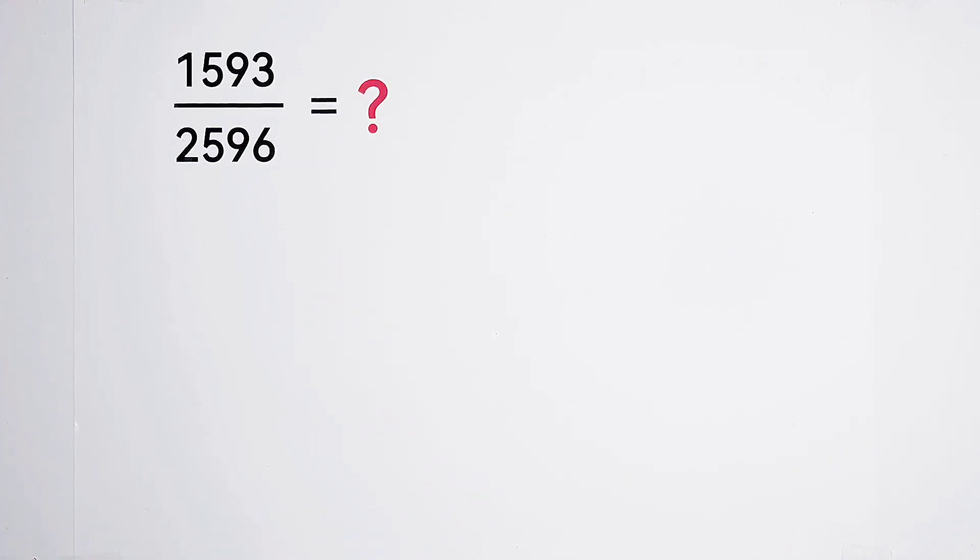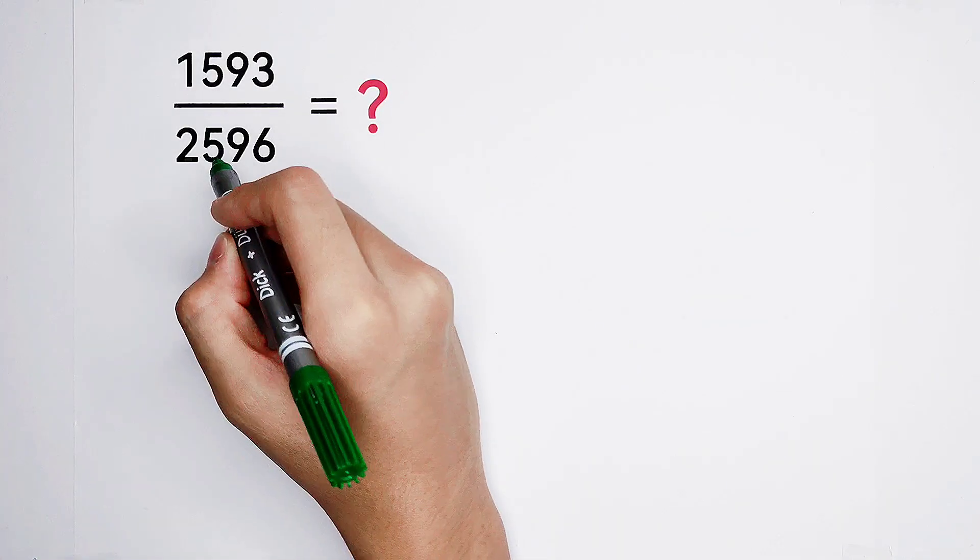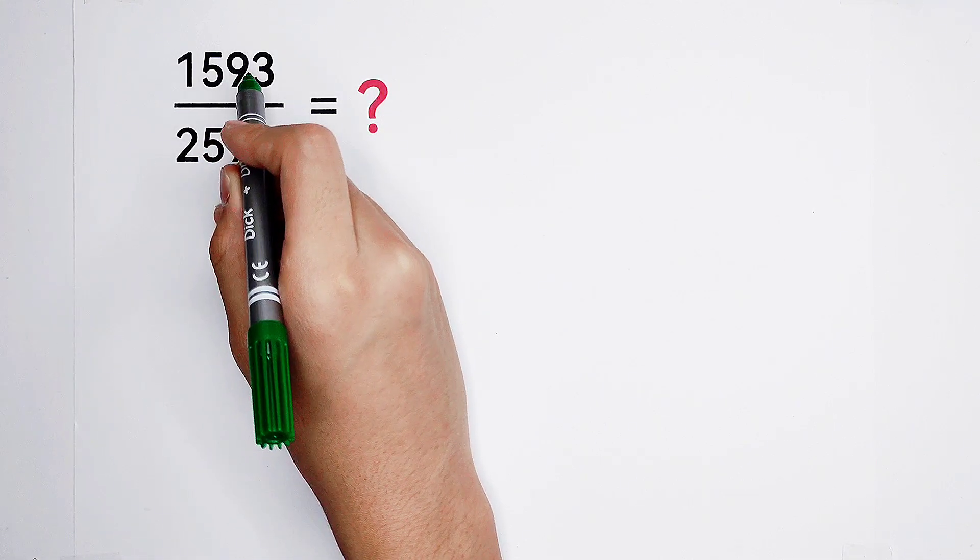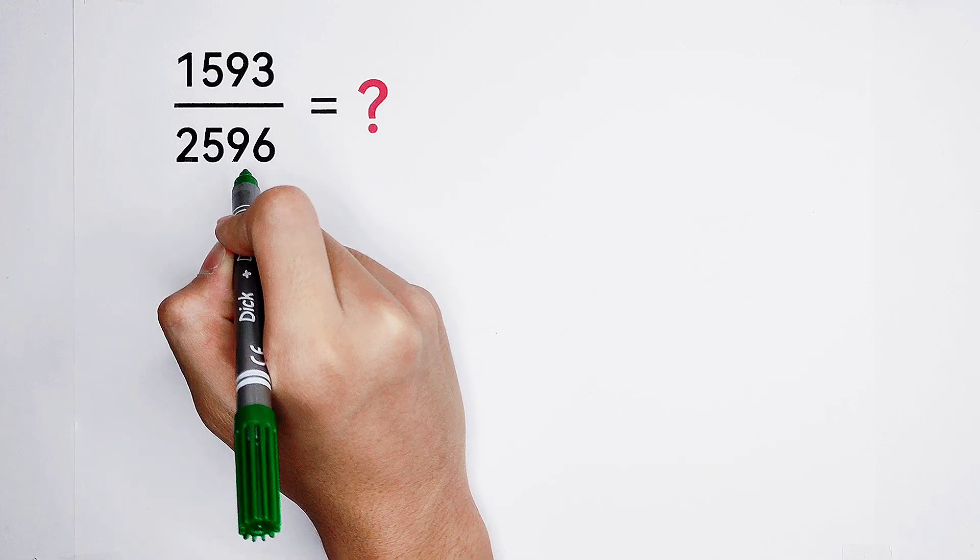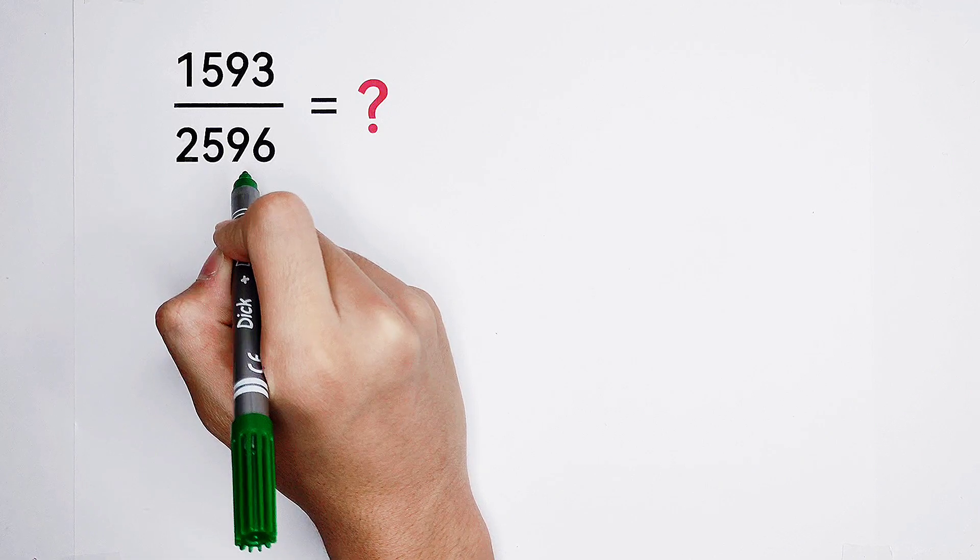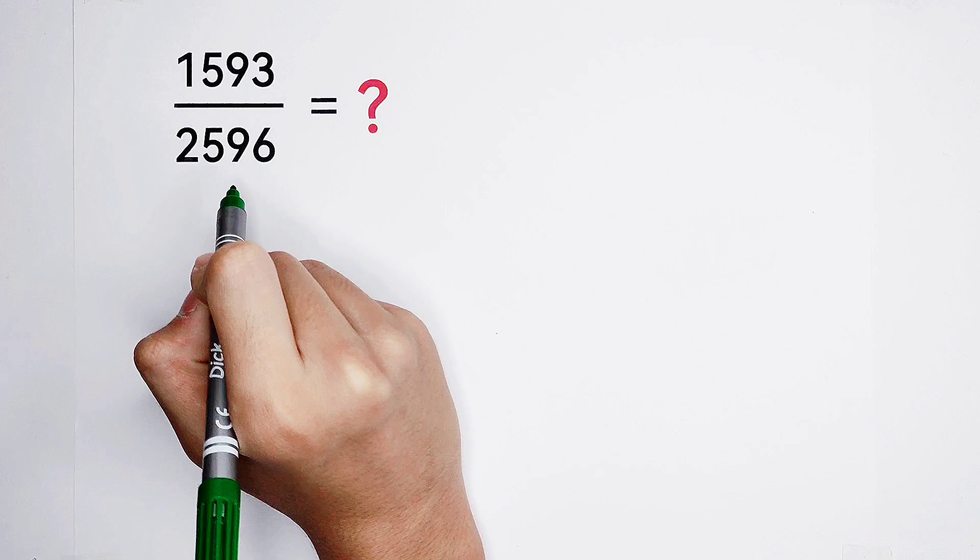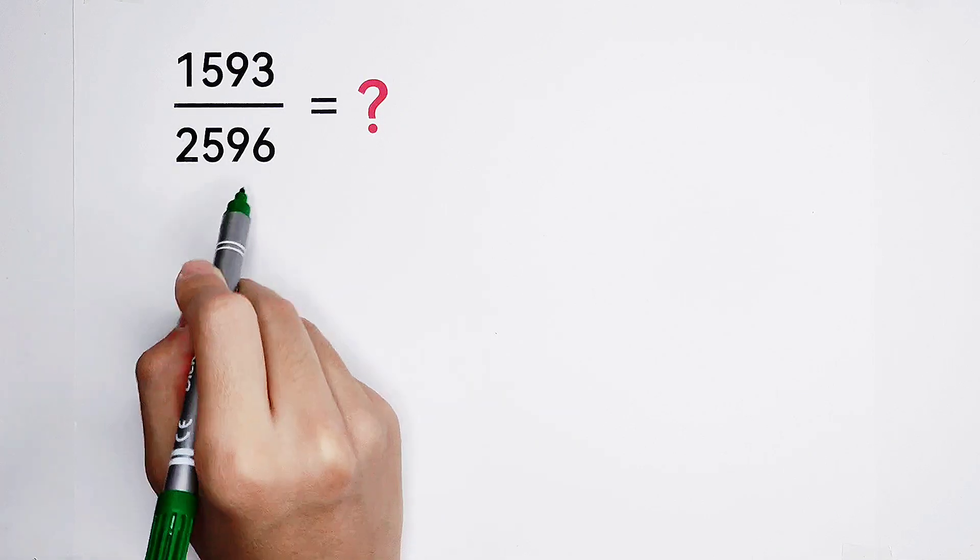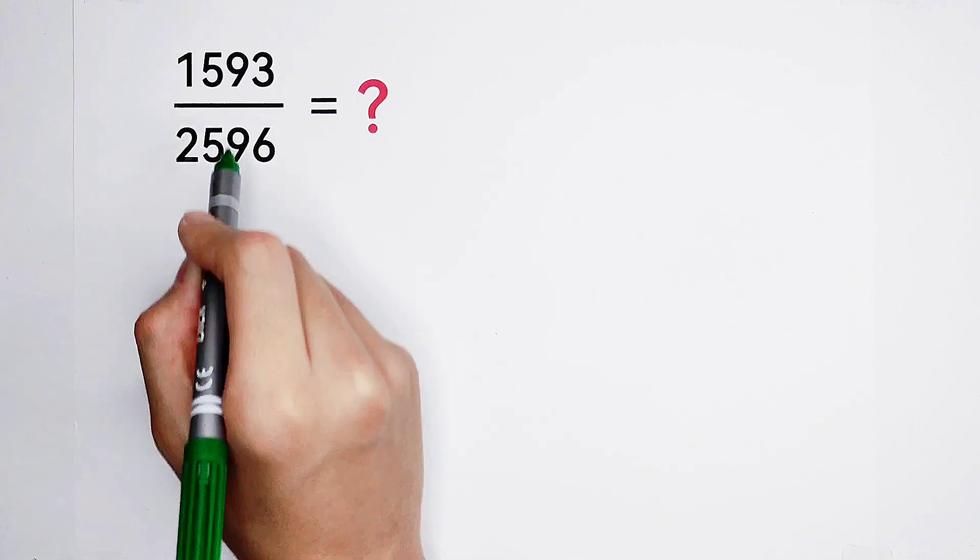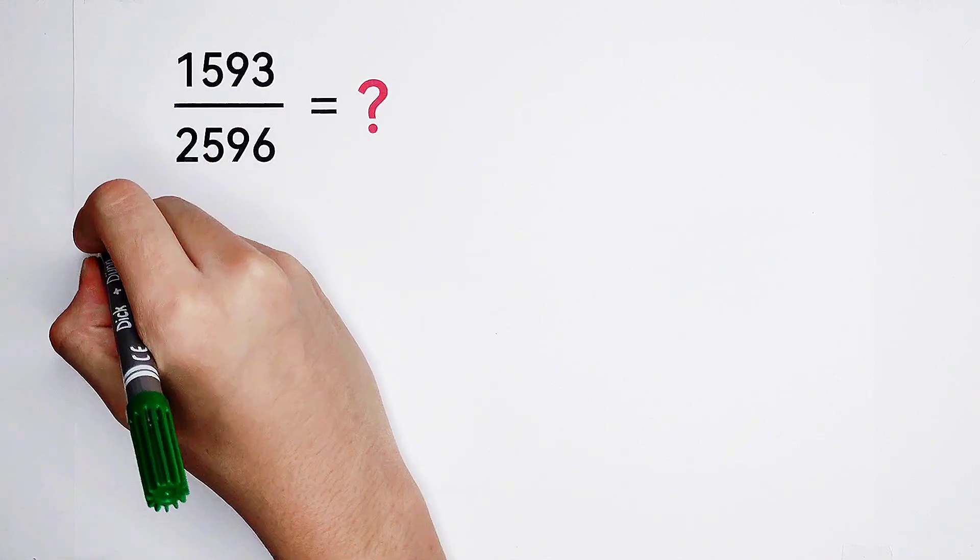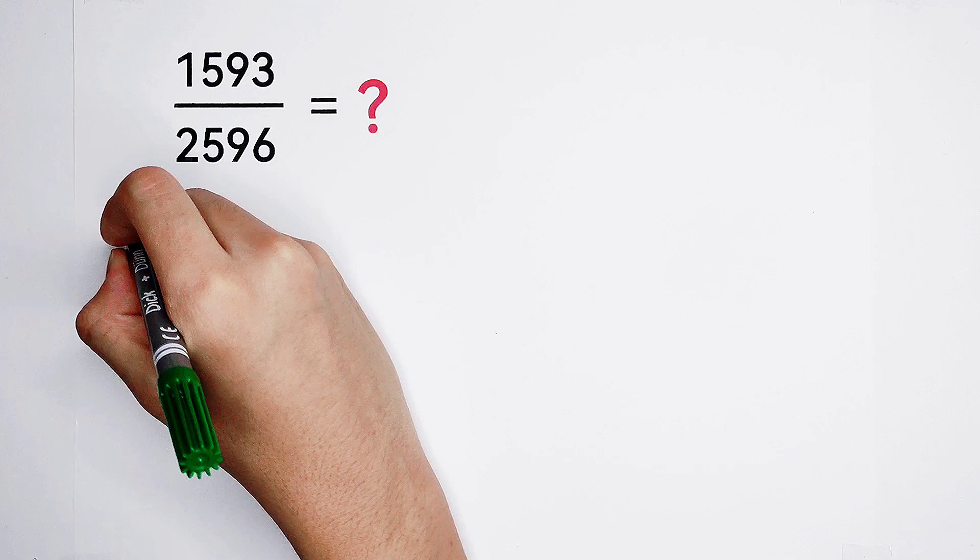Firstly, let's use this method. Compare the numerator with the denominator. Which one has the bigger value? Of course, the denominator. It is 2,000-something. However, the numerator is 1,000-something. So now, write the larger number here,